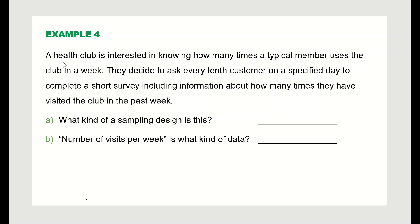Example four: a health club wants to know how many times a typical member uses the club in a week. They decide to ask every 10th customer on a special day to complete a survey about how many times they have visited the club. What kind of sampling design is this? Since they are selecting every 10th customer, this is called systematic sampling.